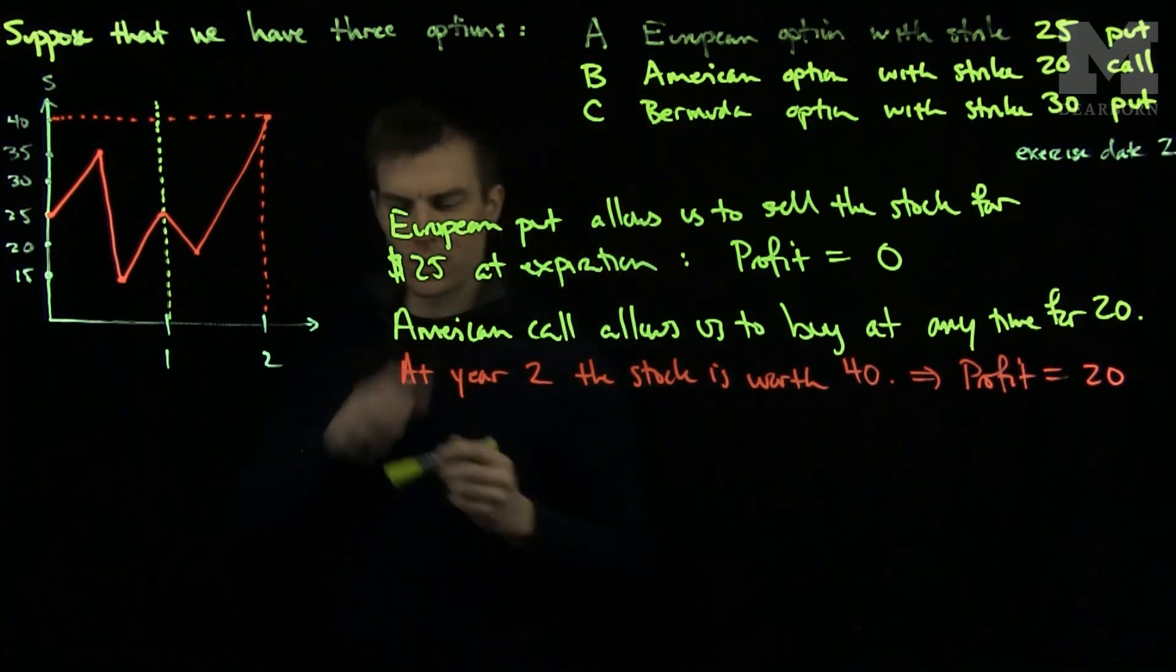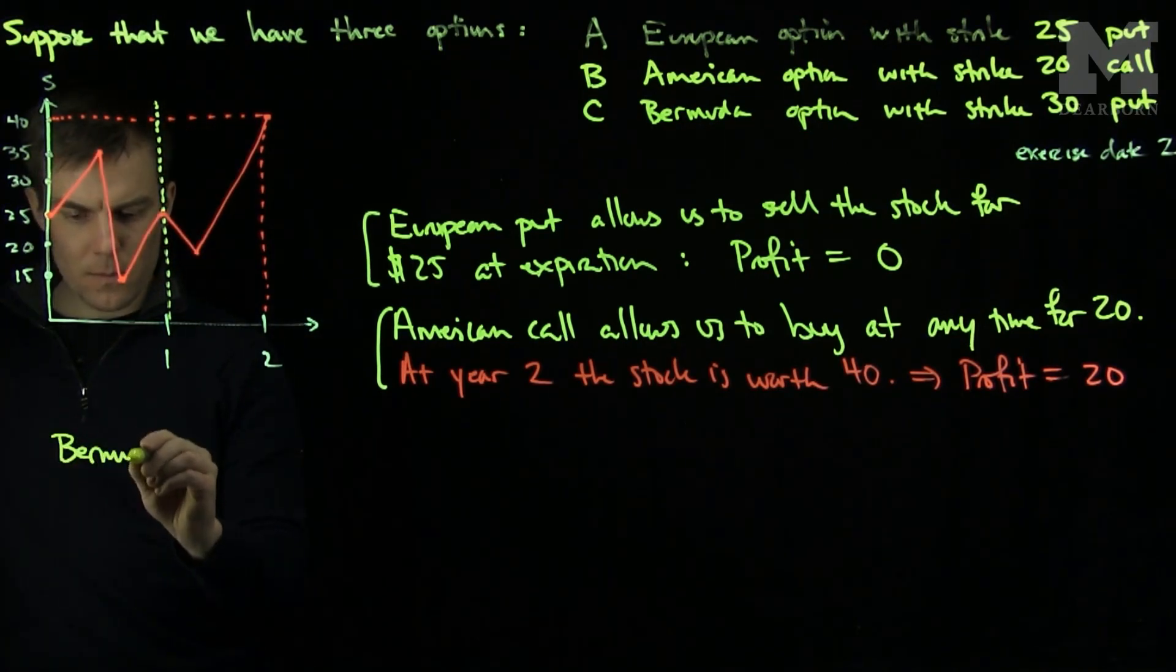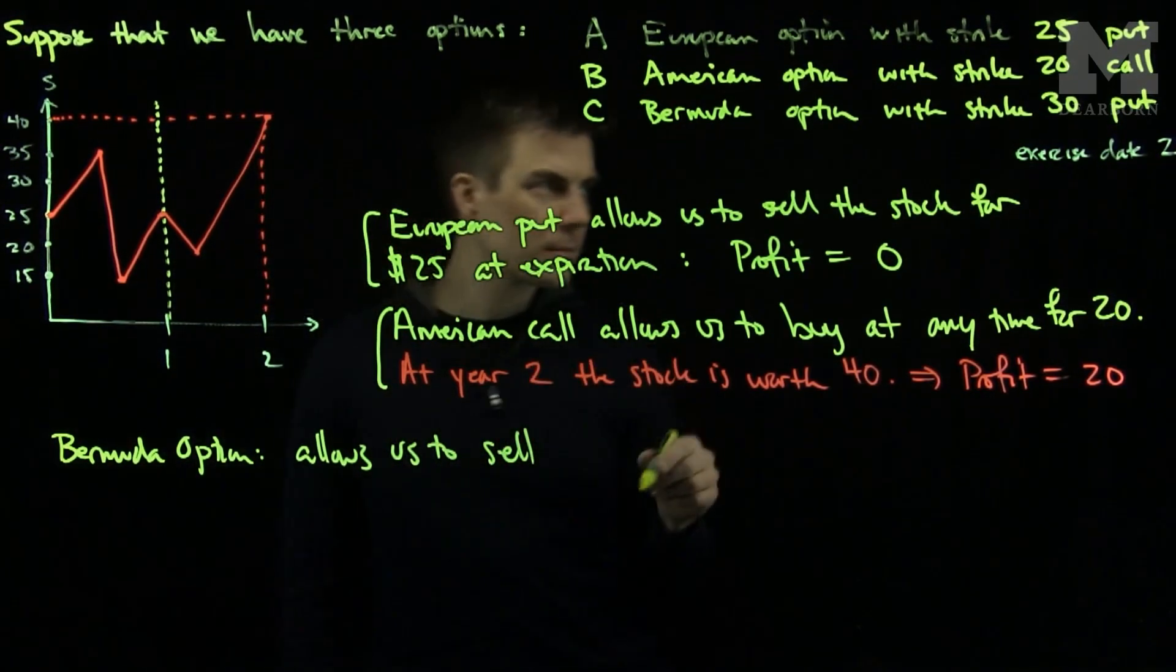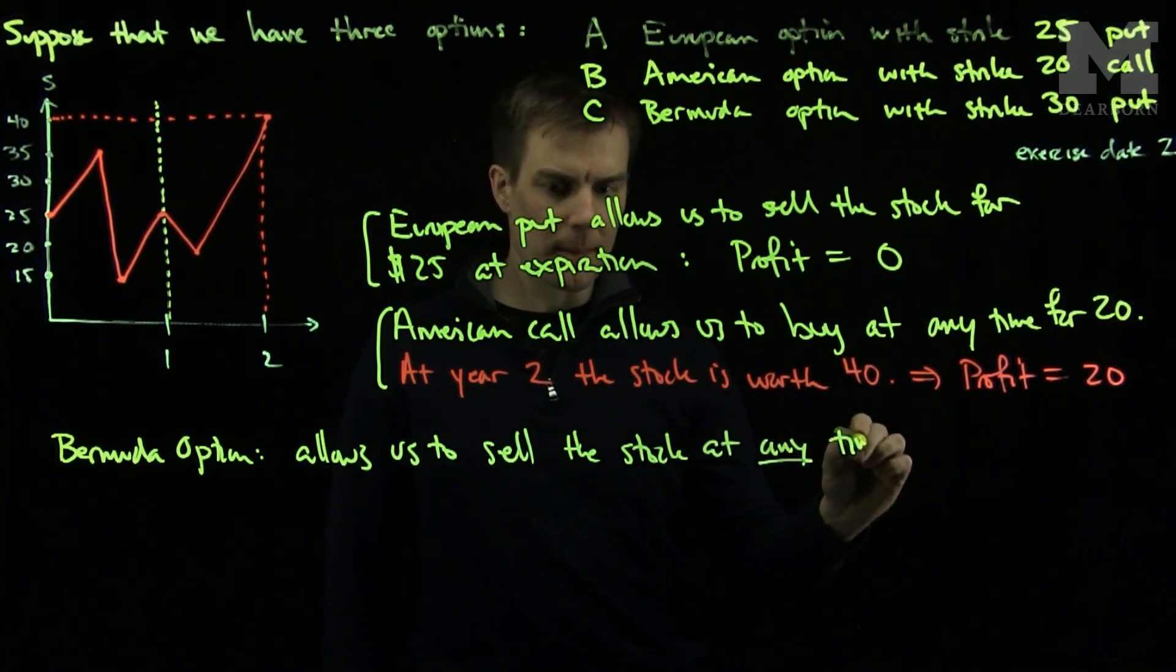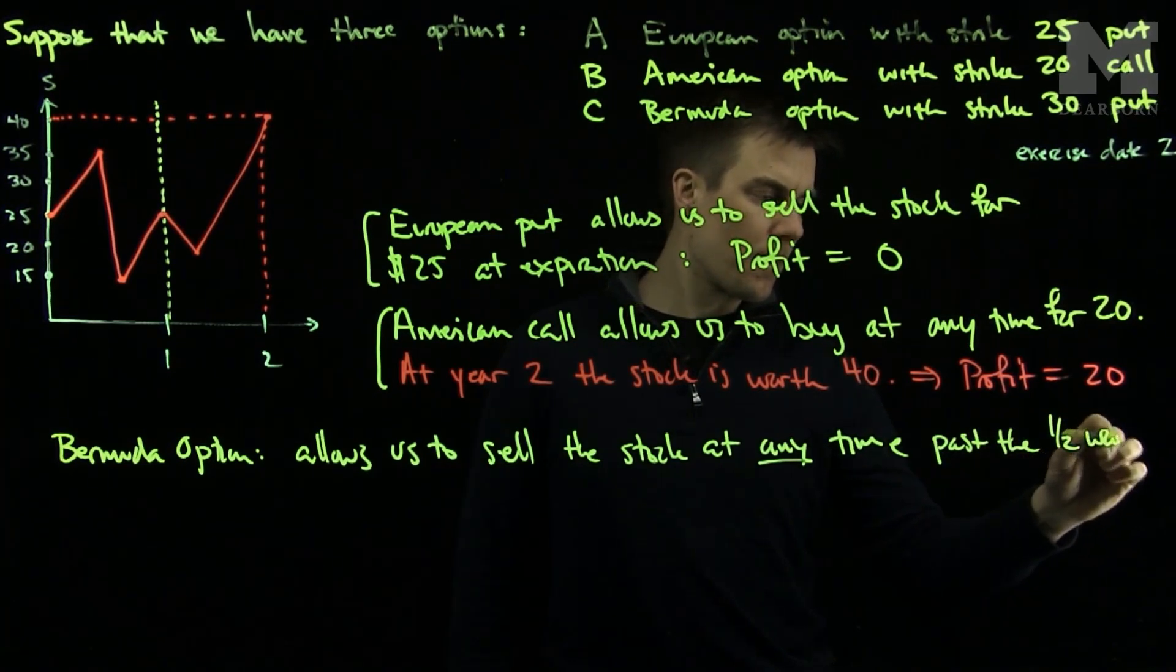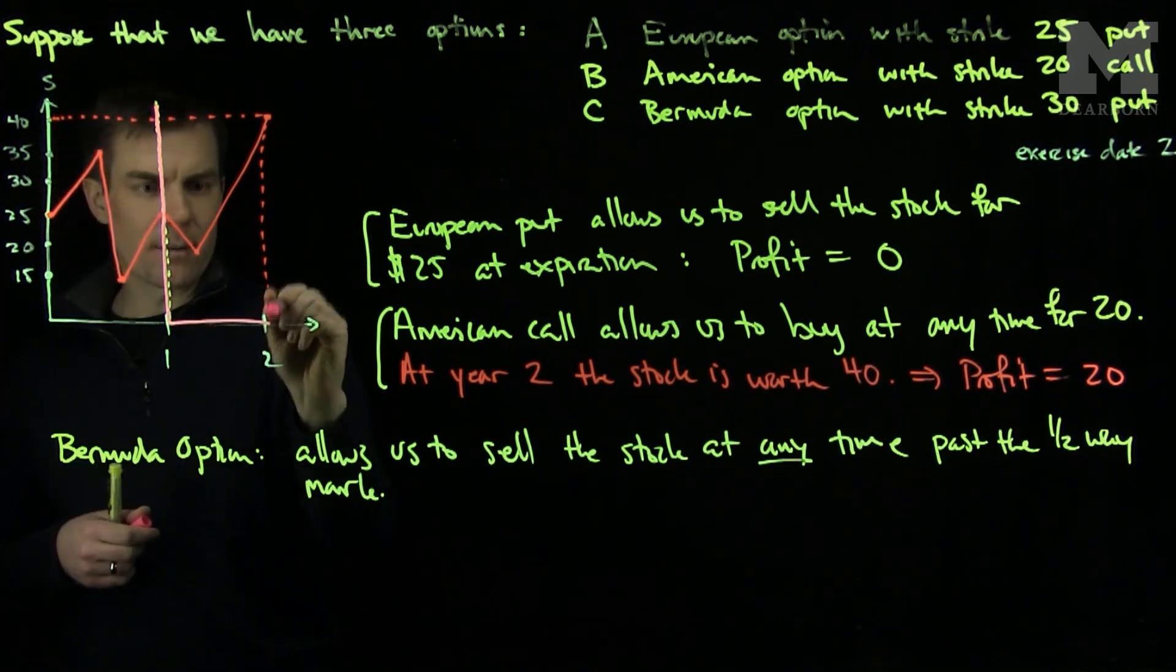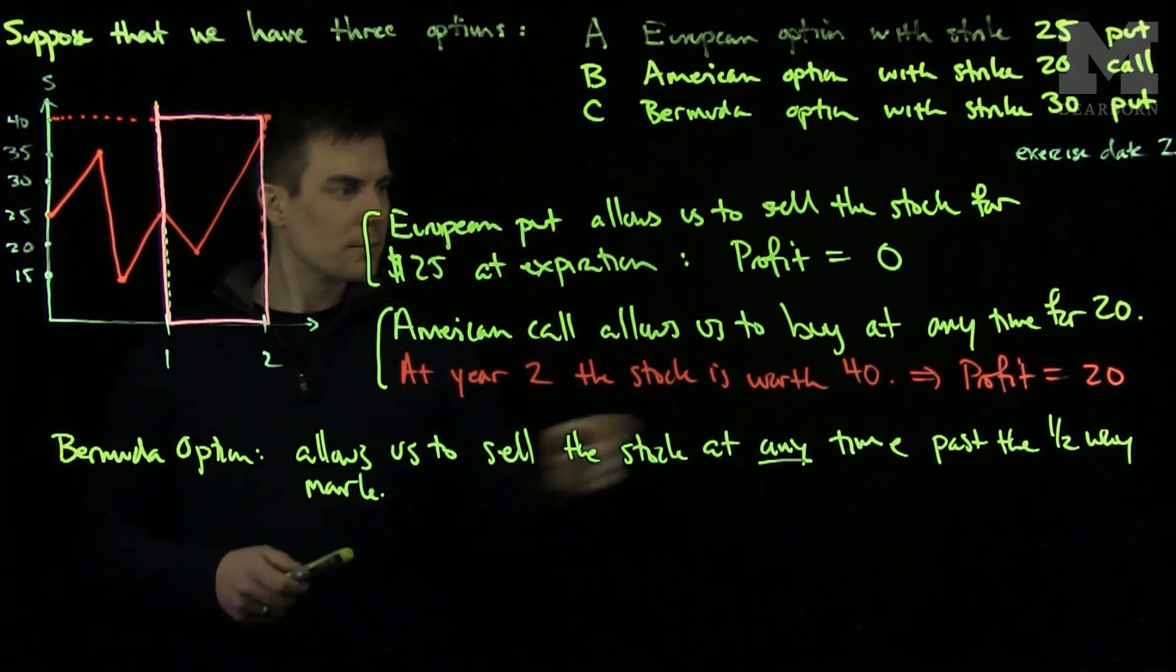Finally we can return to the Bermuda option. The American option is going to give us 20, the European option is going to give us zero. The Bermuda option allows us to sell, since it's a put option, the stock at any time past the halfway mark. So I look at past the halfway mark, and this is the range where I have my Bermuda option. I am allowed to sell the stock for 30.